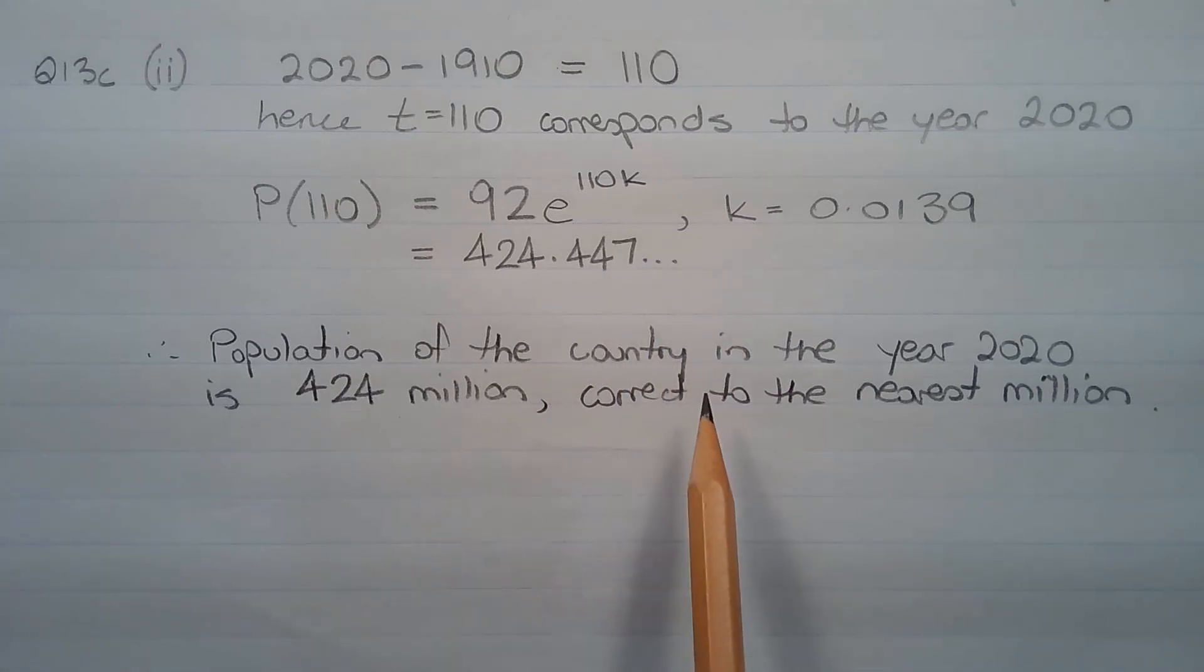Therefore, the population of the country in the year 2020 is approximately 424 million, correct to the nearest million.